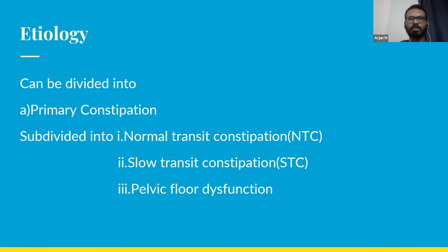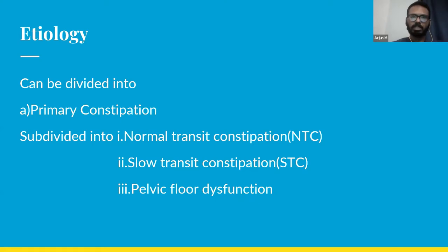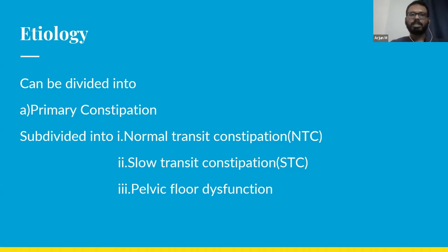Regarding the etiology of constipation, it can be categorized into primary and secondary constipation. Primary constipation is subdivided into three categories: normal transit constipation, slow transit constipation, and pelvic floor dysfunction. In normal transit constipation, transit time is normal and the patient presents with straining — it is similar to irritable bowel syndrome, but the major difference is the lack of abdominal pain. In slow transit constipation, bowel transit time is increased and the patient comes with irregular bowel movements and difficulty during defecation. In pelvic floor dysfunction, there is dysfunction of the pelvic floor or anal structures with excessive straining. Normal transit constipation is the most common type.